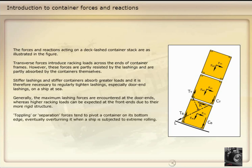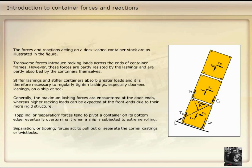Toppling or separation forces tend to pivot a container on its bottom edge, eventually overturning it when a ship is subjected to extreme rolling. Separation or tipping forces act to pull out or separate the corner castings or twist locks.